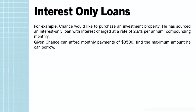This first example is one where we use the formula rather than Finance Solver. Chance would like to purchase an investment property. He's sourced an interest only loan with interest charged at 2.8% per annum, compounding monthly. Given Chance can afford monthly repayments of $3,500, find the maximum amount he can borrow. We're being asked to find our PV or initial value V0, so we use the rule D equals V0 times R over C over 100.